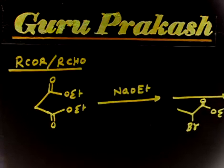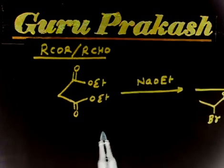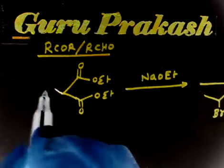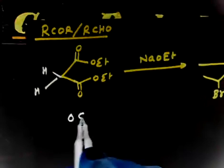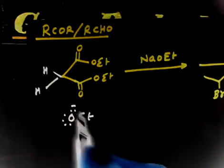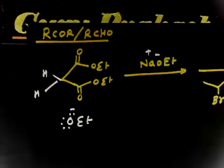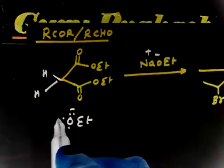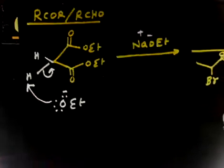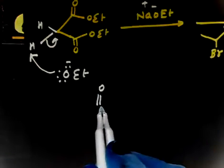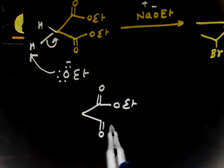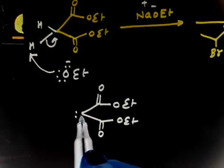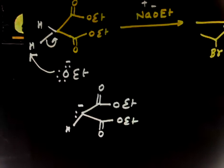In the first step you have to generate a carbanion. So you have this hydrogen — here you have two hydrogens and these two hydrogens are acidic. You have base OEt minus Na plus OEt minus. This base in the first step will take this hydrogen, and we will generate a carbanion. So the carbanion has OEt, OEt, and then a carbon with hydrogen and a negative charge.